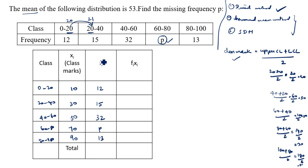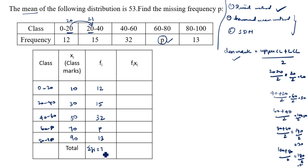Now we will calculate σfi. σfi = 12 + 15 + 32 + p + 13. So: 12 + 15 = 27, 27 + 13 = 40, 40 + 32 = 72. Therefore σfi = 72 + p.